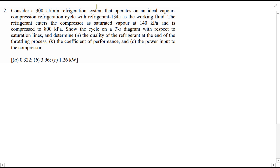Welcome to example sheet 2, question 2. Consider a 300 kJ per minute refrigeration system operating on the ideal vapour compression refrigeration cycle, with refrigerant 134a as a working fluid. Refrigerant enters the compressor as saturated vapour at 140 kPa and is compressed to 800 kPa. Show the cycle on the TS diagram.